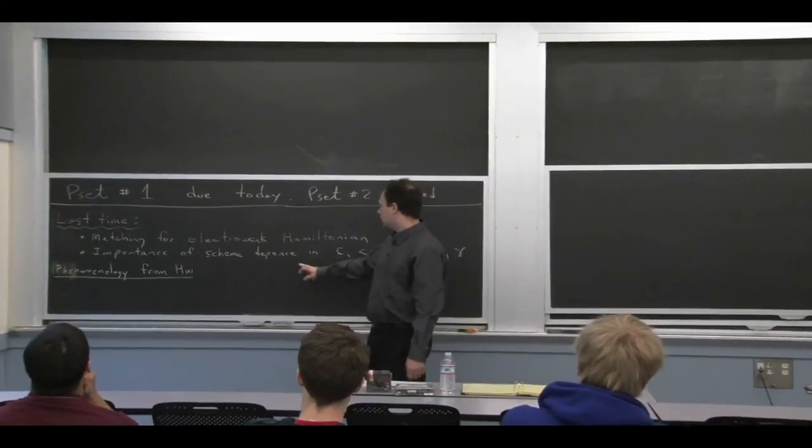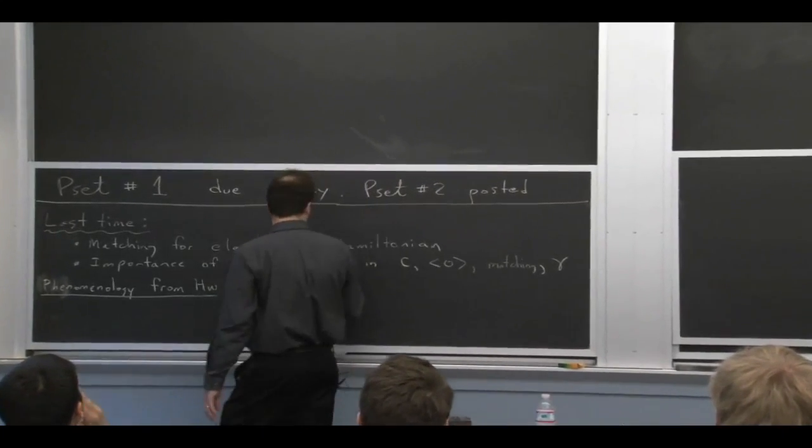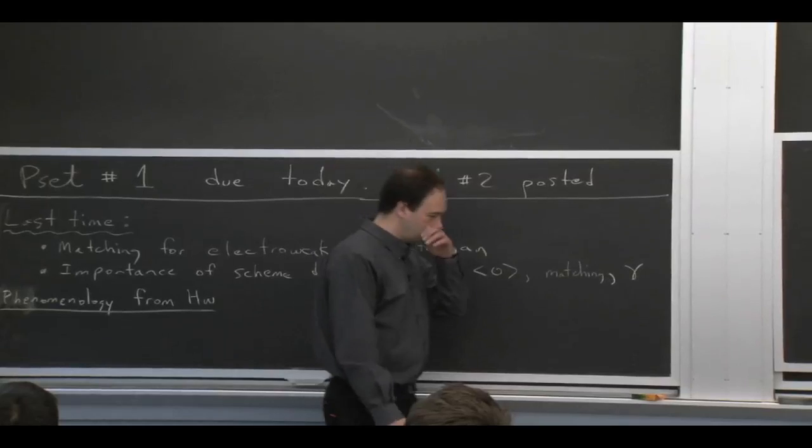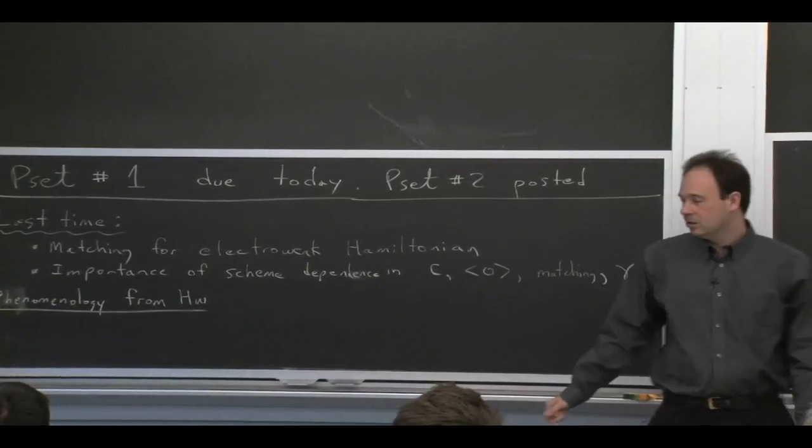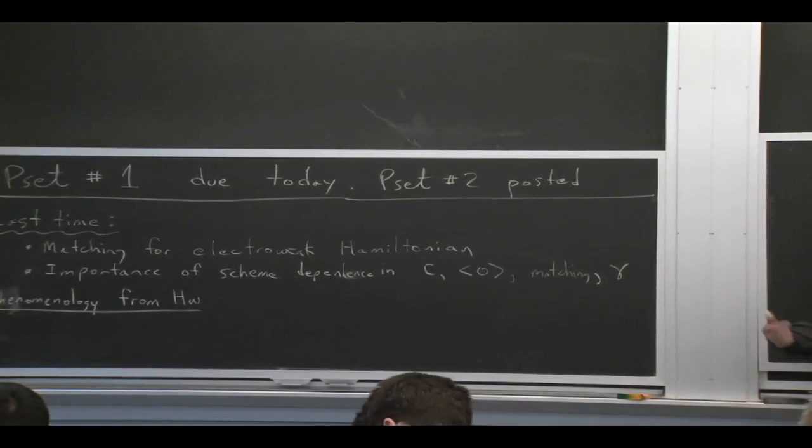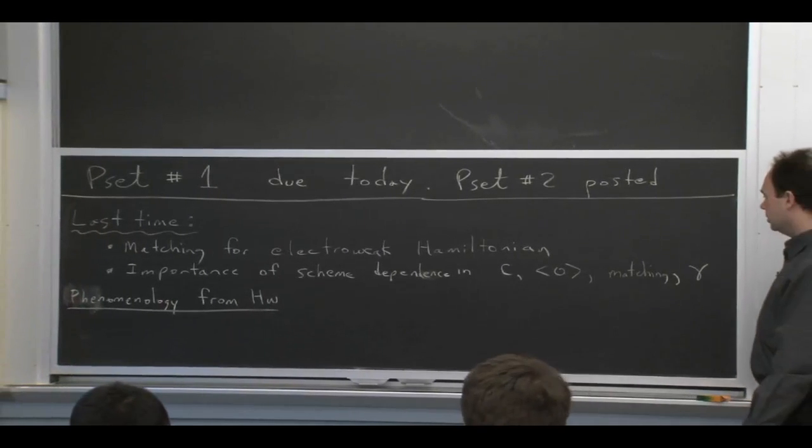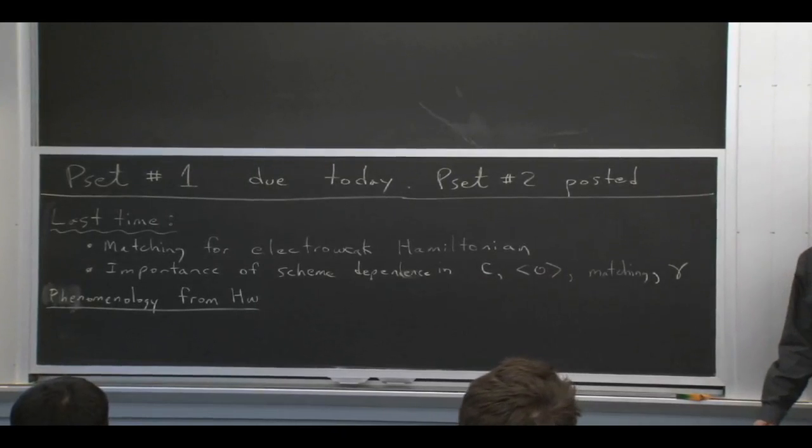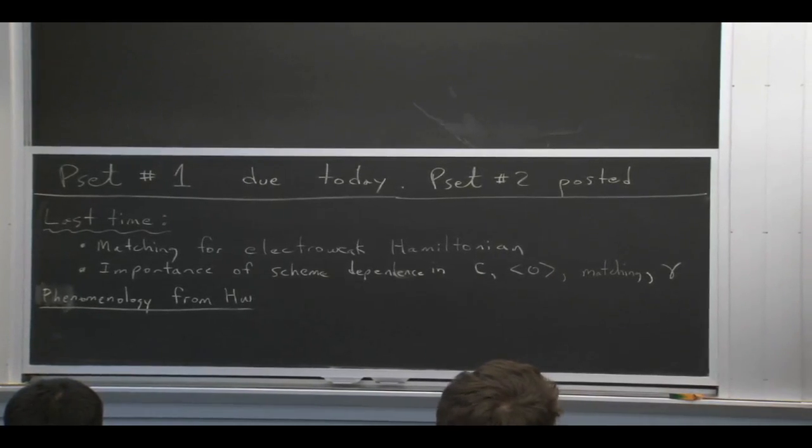And as part of that discussion, we also talked about scheme dependence, because when you do that procedure of renormalization in the effective theory, you're making a choice for the scheme. We picked MS bar, but you could pick other choices. And at the end of lecture, we talked about the fact that when you make different scheme choices, it can affect things.